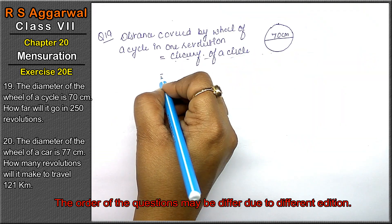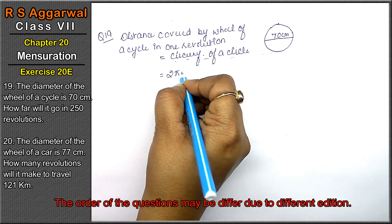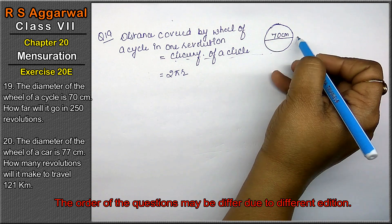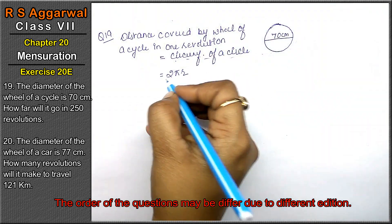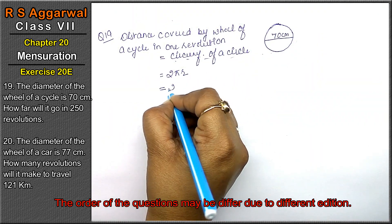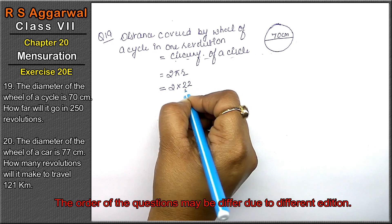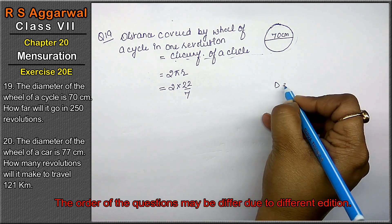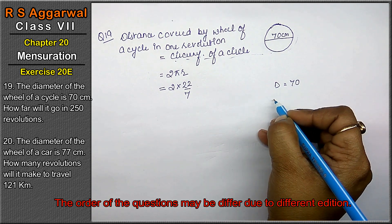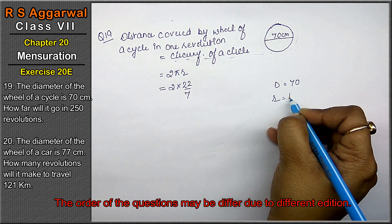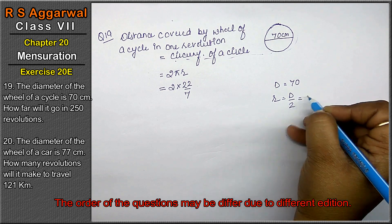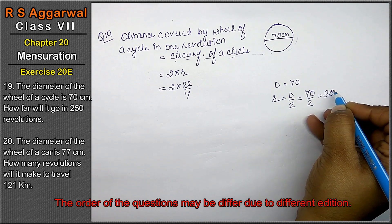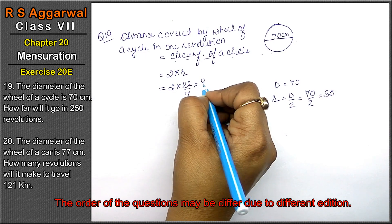Right, friends? Circumference kya hota hai? That is 2πr. Ye wheel ka outer part na pijathe hai ki kitna distance cover kiya. So: 2 into 22/7. Radius kitna hai? Diameter hai 70 cm. To radius hota hai d upon 2, that means 70 upon 2, that means 35. So 2 × (22/7) × 35.